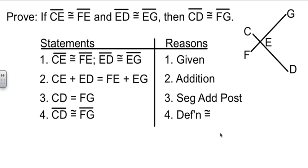Okay, what did we do? Let's go through it again to make sure you've got it. We had two different things that were equal. So we added those together. CE plus ED. FE plus EG.